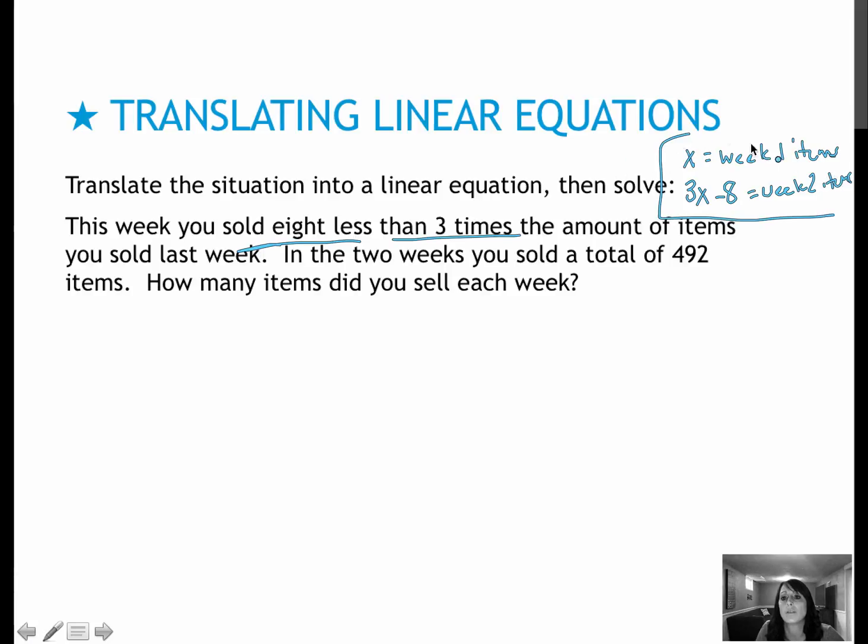Honestly, hardest part right there. Once you get that, it's smooth sailing. So in words, the relationship is week 1 items plus week 2 items equals total items. My week 1 items were x. My week 2 items were 3x minus 8. My total items are 492. That's using my known and my 2 unknowns.